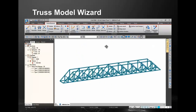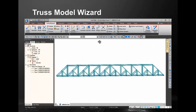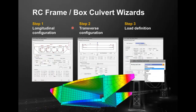Similarly, we have a box culvert wizard. You provide longitudinal information for a box, pi-frame, or normal frame type, and you can generate a 2D or 3D model. First you give the longitudinal configuration, then the transverse configuration, then the load definition, and click OK — this type of model is easily generated.